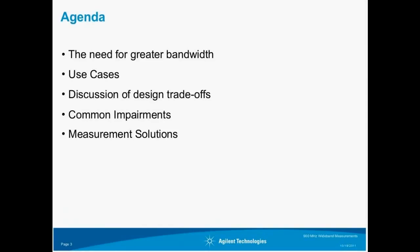Let's get to our agenda. First, we are going to discuss how technological advancement and necessity have driven the need for greater bandwidth for commercial and military applications. We will next discuss a couple of wideband examples from radar and digital communication. Then we will talk about the tradeoffs between power, efficiency, complexity, and bandwidth. We will weave substantial theory of common impairments into our discussion of design considerations, and explain how all of these translate into the need for wider modulation bandwidths, and thus wider measurement bandwidths. Finally, we will discuss our measurement solutions.